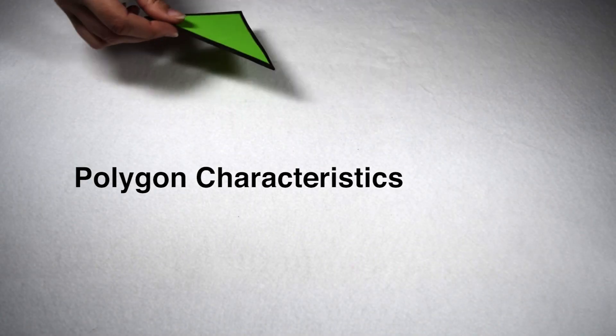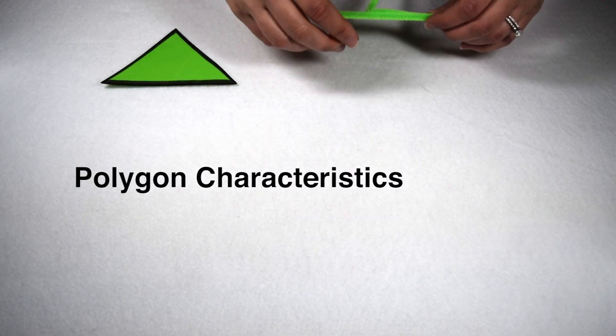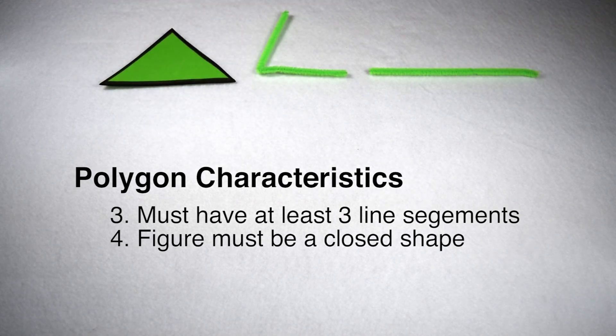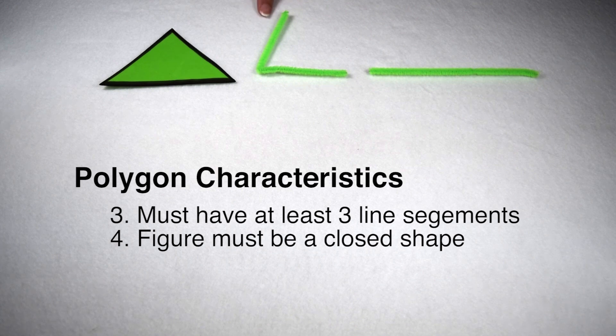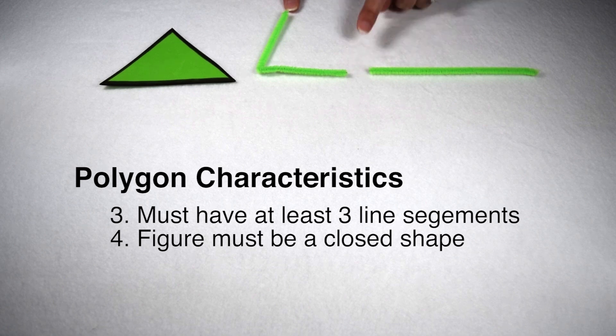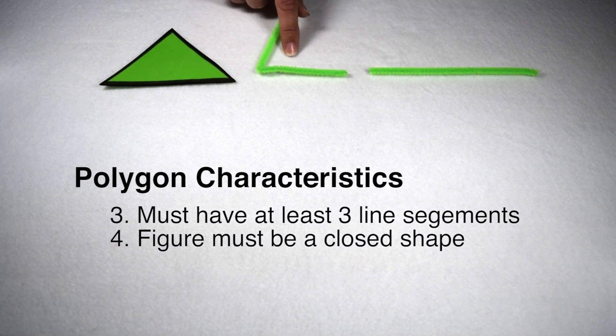Not only do we need to have line segments to make up our edges, we also need to make sure we have enough line segments so that they can all join at their end points. This creates a closed figure. If we use just one line segment, we have exactly that, a line segment. Two line segments form an angle, because while they do join at their end point, these end points don't have anything to join with, and it creates a way in and out of that angle, therefore it's not a polygon.